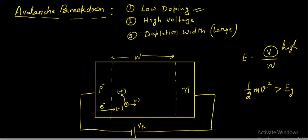The newly generated electron-hole pairs appear in the depletion region. This is a high electric field region. The kinetic energy of these electrons starts to increase again. This entire region becomes a source of further electron-hole pair generation.